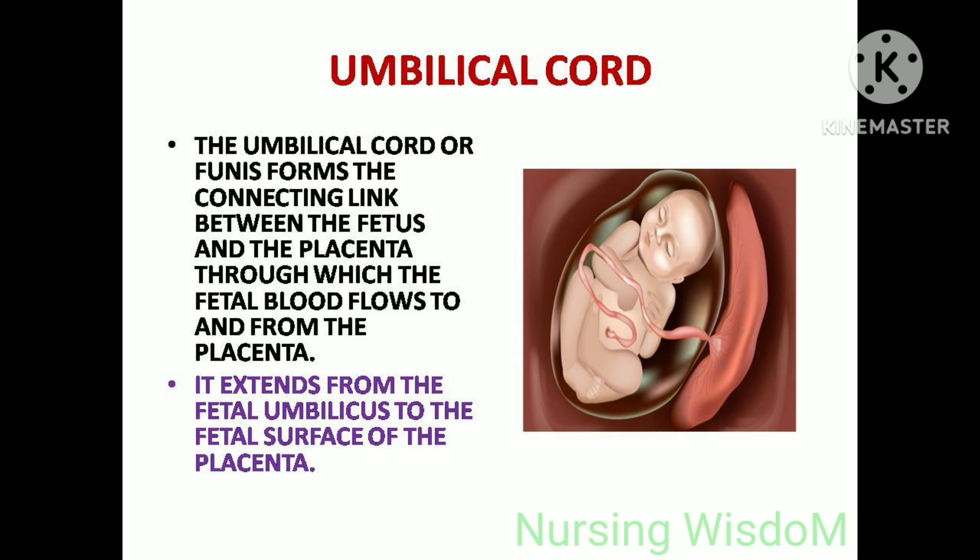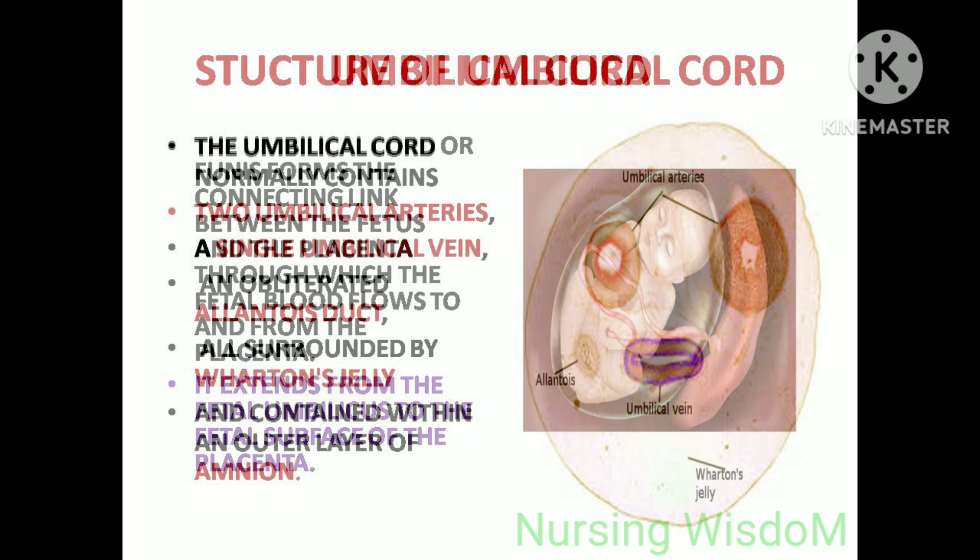The umbilical cord, or funicle, forms the connecting link between the fetus and the placenta, through which the fetal blood flows to and from the placenta. It extends from the fetal umbilicus to the fetal surface of the placenta.